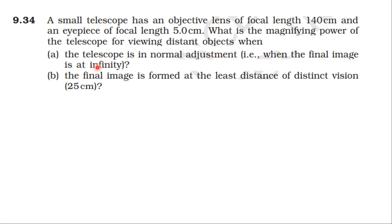That is, the image at infinity formed. Second one, the final image is formed at the least distance of distinct vision. So the focal length of the objective lens is 140 cm, focal length of the eyepiece is 5 cm.